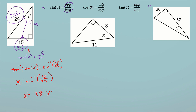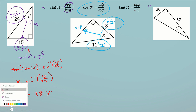Looking at the second problem, I start by identifying the angle of reference — that's the angle I need to find. The side across from it I label as my opposite side. I should always find the hypotenuse, which is across your 90-degree angle and is the longest side. The side right next to the angle of reference is the adjacent side. I'm going to circle the two sides I have information for, which in this case is the adjacent and the hypotenuse.